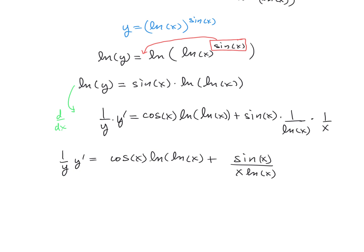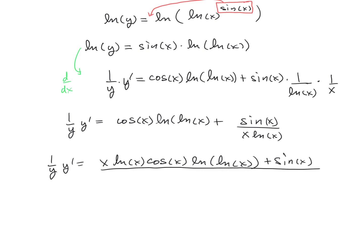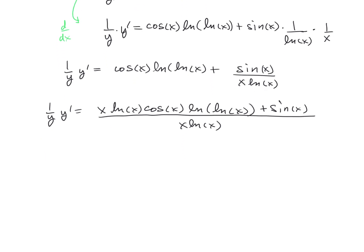We can then get common denominators — even though you don't really gain a lot from that, but you could. We would have 1 over y times y prime is equal to x ln x times cosine of x times the natural log of the natural log of x, plus the sine of x, over the quantity x times the natural log of x.